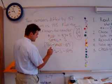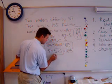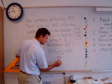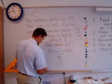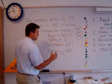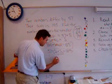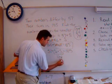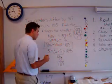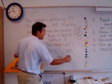Does 54 work? Is 57 plus 54 plus 54 equal to 185? 54 plus 54 is 108, and 108 plus 57 is 165 — doesn't work. Let's try 64. 64 plus 64: 60 and 60 is 120, so that's 128. What's 57 plus 128? 185! That works. So 74 is not going to work — it'll be too much.